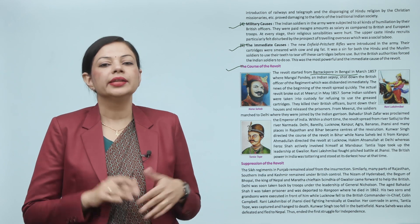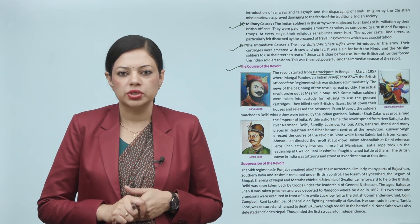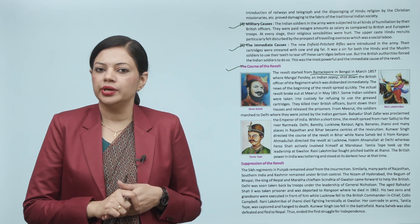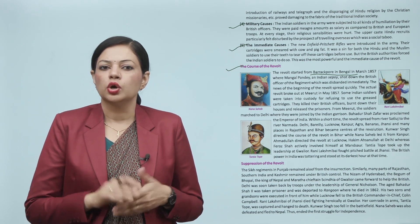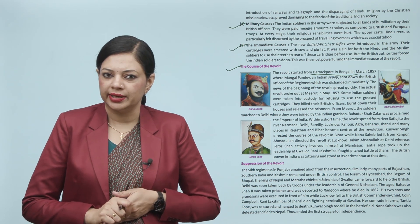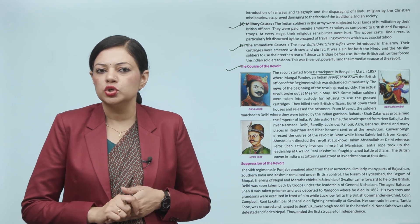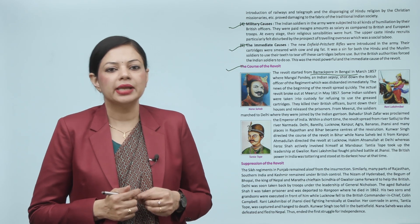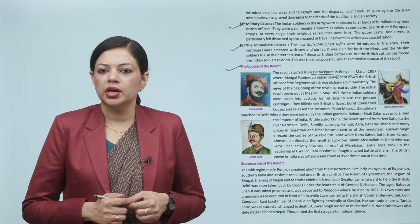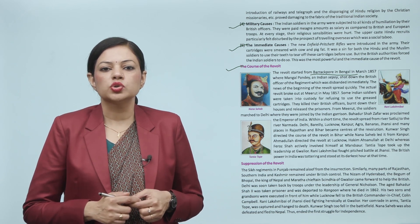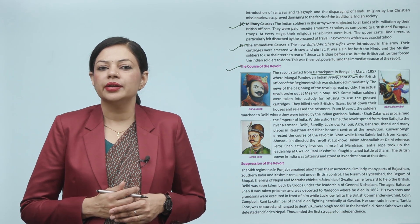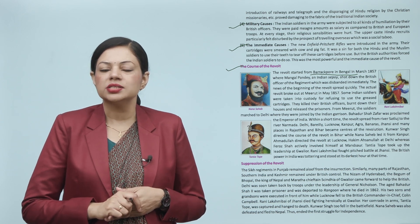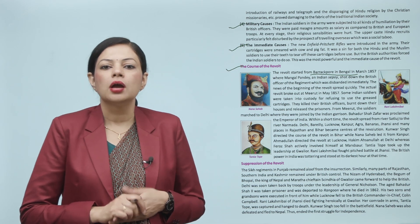From Meerut, the soldiers marched to Delhi, where they were joined by the Indian garrison. Bahadur Shah Zafar was proclaimed the Emperor of India. Within a short time, the revolt spread from the river Sutlej to the river Narmada. Delhi, Bareilly, Lucknow, Kanpur, Agra, Banaras, Jhansi, and many places in Rajasthan and Bihar became centers of the revolution. Kunwar Singh directed the revolt in Bihar, Nana Sahib led it from Kanpur, Ahmadullah directed the revolt at Lucknow, Hakim Ansullah at Delhi, and Feroz Shah was actively involved at Mandsaur.